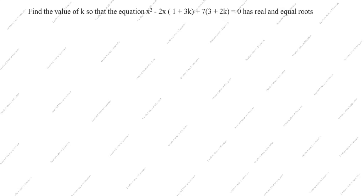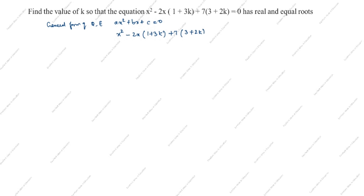What is the general form of a quadratic equation? ax squared plus bx plus c equals 0. What is given in this question? x squared minus 2x(1 plus 3k) plus 7(3 plus 2k). What is a? a is equal to 1. b is equal to minus 2(1 plus 3k). What is c? c is equal to 7(3 plus 2k).